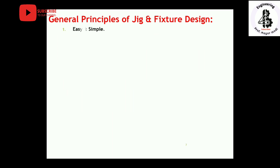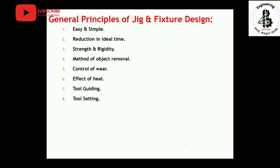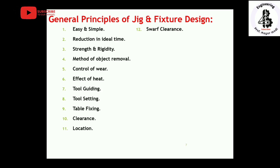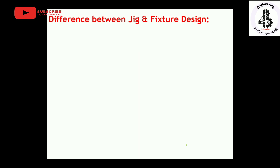The general principles of jigs and fixtures include: easy and simple design, reduction in idle time, strength and rigidity, methods of object removal, control of wear, effect of heat, tool guiding, tool setting, table fixing, clearance, location, chip clearance, clamping, fool-proofing, safety, fatigue, and handling. These are all the general used principles of jigs and fixtures.